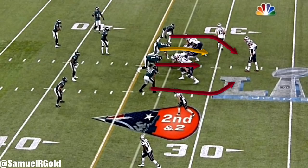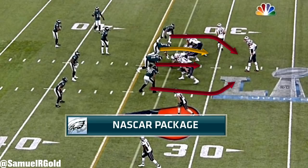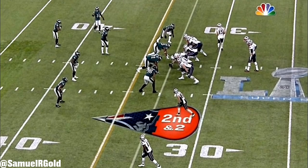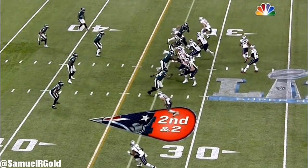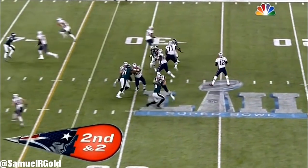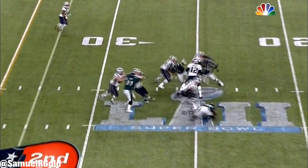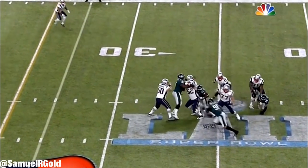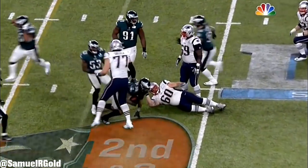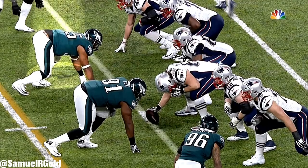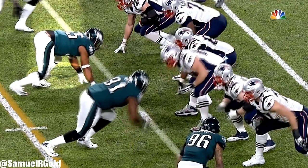Pre-snap, the Eagles line up in an over y9 front. They have four down linemen while using six defensive backs in the secondary. This defense is actually the Eagles' NASCAR package — their goal is to get more speed on the field and set up one of their best pass rushers with a one-on-one opportunity versus a guard. That's exactly what happened here, as Graham matched up against the right guard.